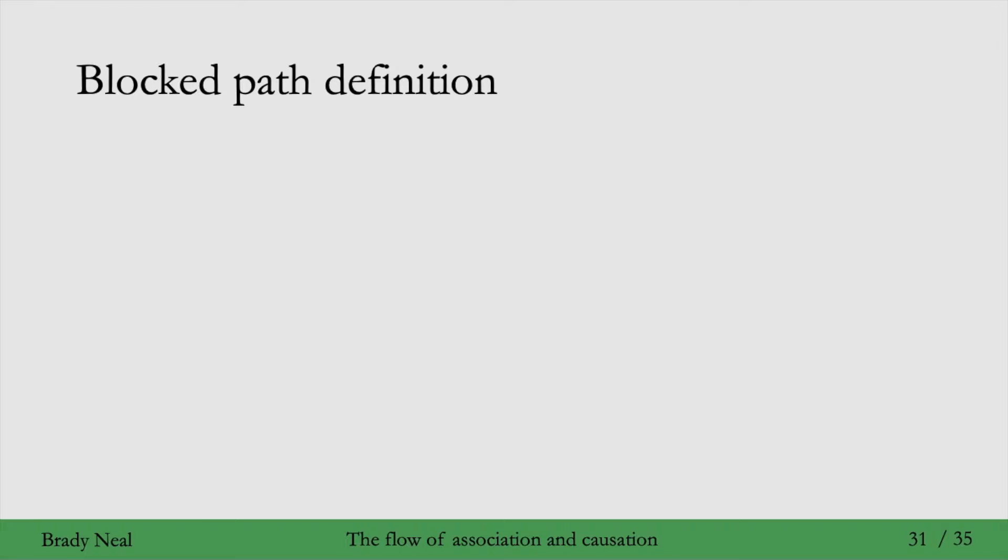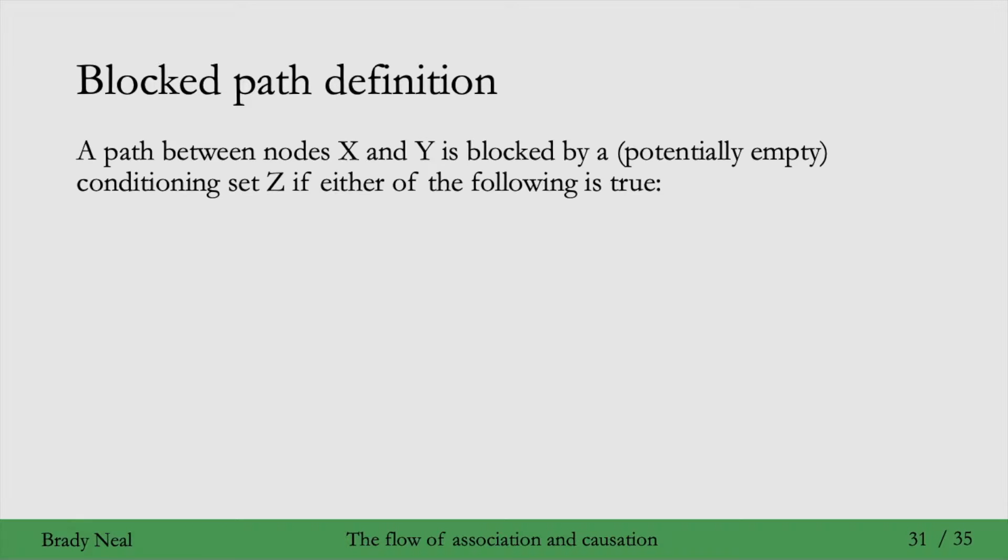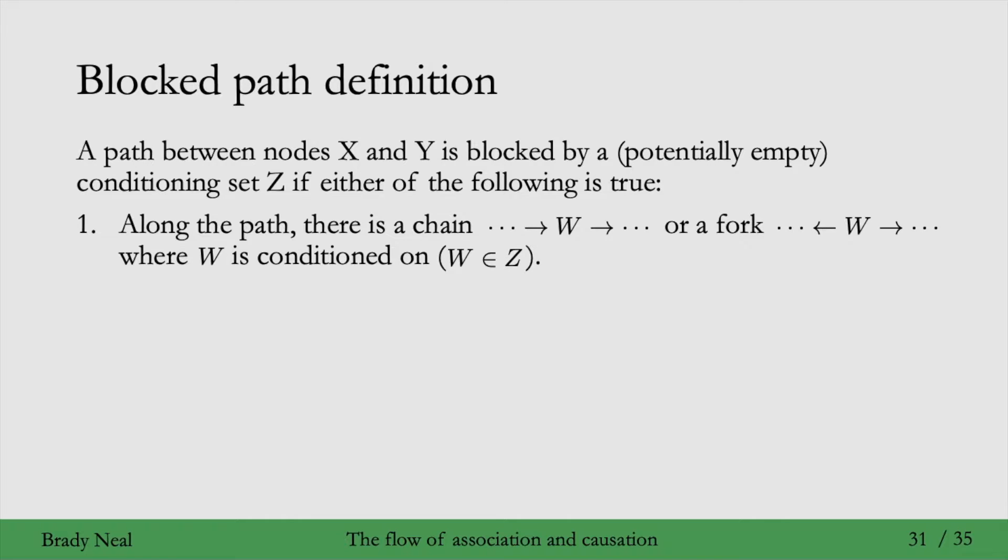First, we'll give a more formal definition of what a blocked path is that we've been talking about. A path between two nodes X and Y is said to be blocked by a potentially empty conditioning set Z if either of the following is true. If along the path there is a chain or a fork with W in the middle of that chain or fork and W is in the conditioning set Z, then that blocks that path. This is what we saw in the chains and forks part of the lecture.